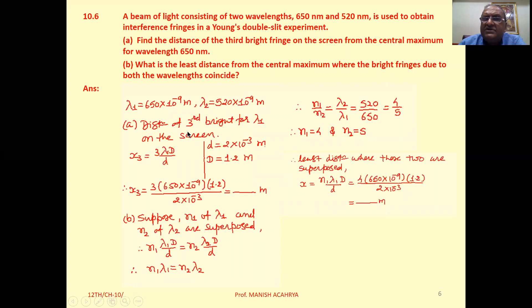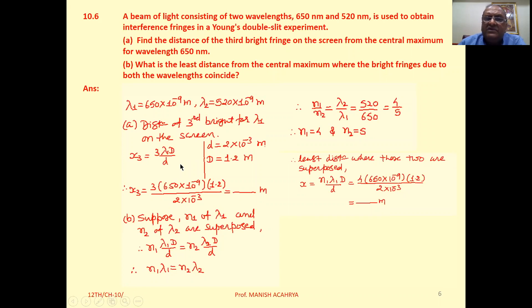Now distance of third bright for lambda 1 on the screen. So the equation for the position of the bright fringe on the screen, we write x equal to n lambda D by d. For third one, we can write x₃ that is equal to 3 lambda 1 D by d.